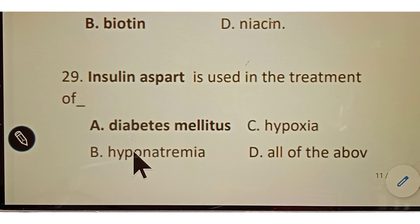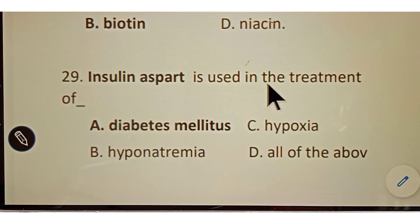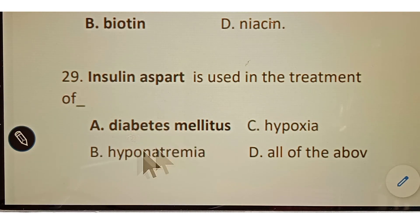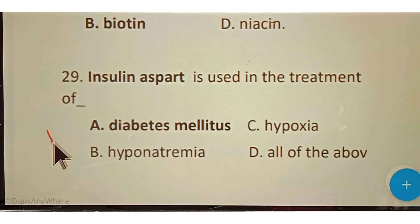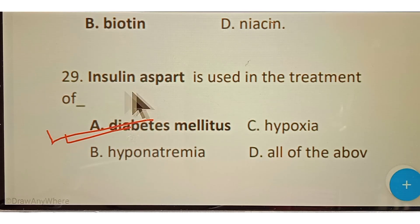Question number twenty-nine: Insulin aspart is used in the treatment of? Options given: A. Diabetes mellitus, B. Hyponatremia, C. Hypoxia, D. All of the above. The correct answer is option A, Diabetes mellitus. Insulin aspart is used in the treatment of diabetes mellitus.